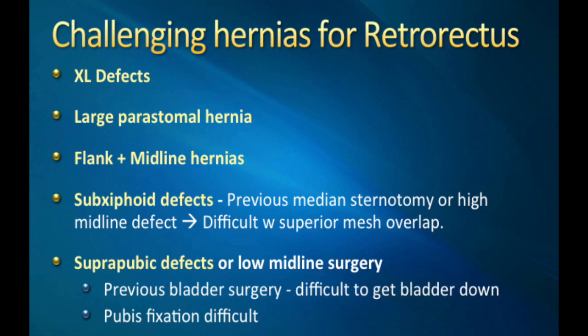How about a large peristomal defect, or one that's out more toward the side toward the linea semilunaris? Even things like flank hernias in conjunction with a midline hernia that you need to reinforce not only the lateral flank but also the center of the abdomen. Subxiphoid defects can be very hard to fix in a retrorectus because that plane stops at the xiphoid process and you won't be able to get sufficient overlap superiorly. Additionally, larger suprapubic defects, or ones after previous prostatectomy or radiation, can be aided with the use of TAR.